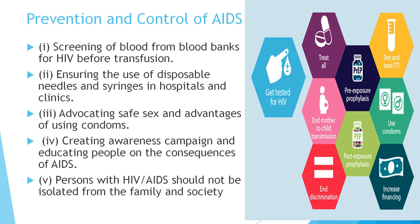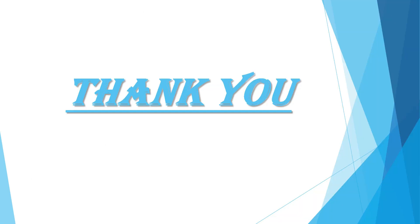Prevention and control of AIDS: screening blood from blood banks for HIV before transfusion must be done. Ensure the use of disposable needles and syringes in hospitals and clinics. Advocate safe sex and the use of condoms. Create awareness campaigns and educate people on the consequences of AIDS. Persons with AIDS should not be isolated from their family and society.